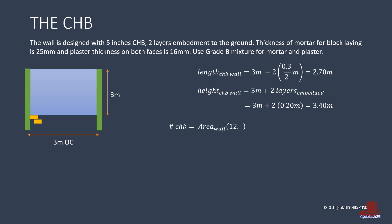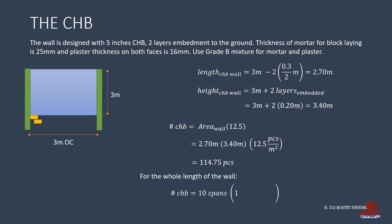To find the number of CHB, multiply the wall area by the factor 12.5: that is 2.7 by 3.4 meters multiplied by 12.5 pieces per square meter, giving 114.75 pieces. This value is for one span between two columns, so multiplying by 10 spans gives 1,147.5 pieces for the whole wall.